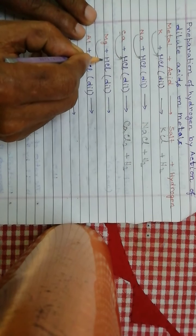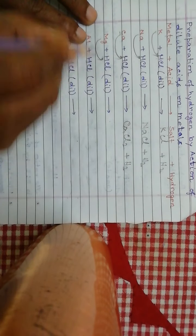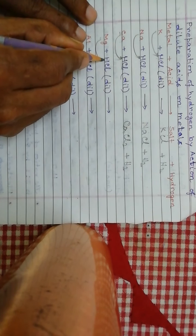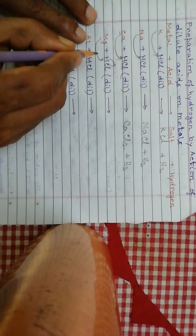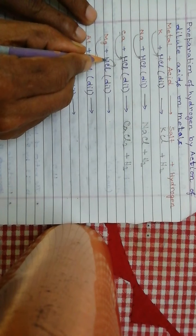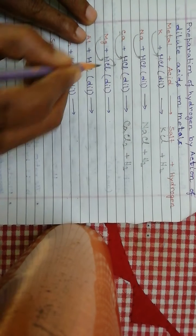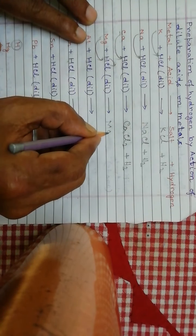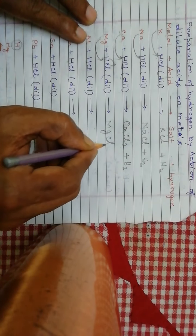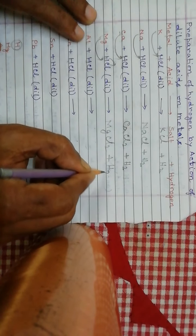Now when magnesium reacts with HCl, magnesium also displaces hydrogen. Magnesium takes the place of hydrogen, so the product is magnesium chloride plus hydrogen.